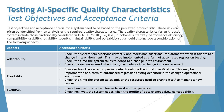We will determine the acceptance criteria for different aspects of AI-based systems. The test objectives and acceptance criteria for a system need to be based on the perceived product risk. If you drive your acceptance criteria only on functionality, it may cater only to functionality, but when you go with respect to risk, it helps you to mitigate risk and track how much risk has been mitigated.